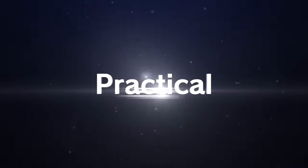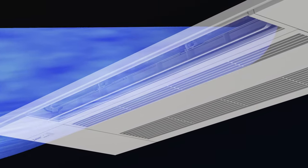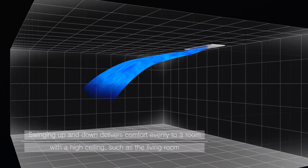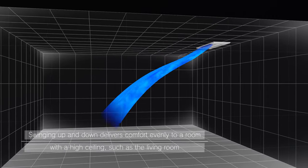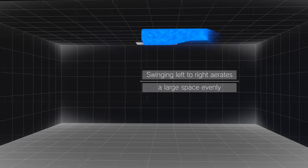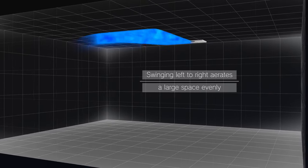The MLZ series is designed practical and energy efficient. The auto vane control feature includes intermittent up and down swinging that delivers comfort evenly to a room with a high ceiling such as the living room. It can also aerate a large space evenly with its outlet vanes moving left to right.